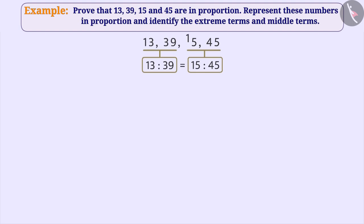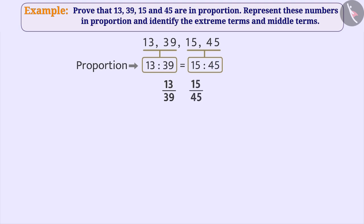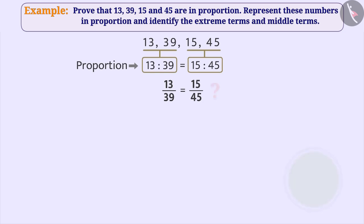So, to prove that 13 is to 39 is equal to 15 is to 45, we can write 13 is to 39 as 13 by 39, and we can write 15 is to 45 as 15 by 45. In order to find whether two fractions are equal or not, we will convert both fractions into their simplest forms.